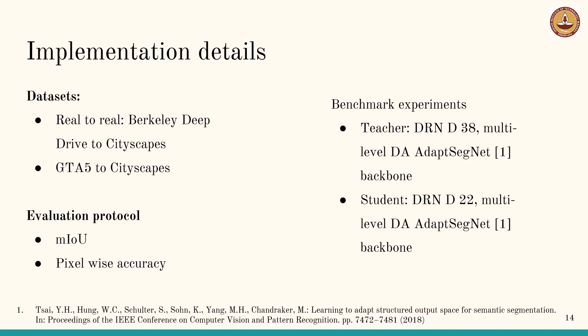We evaluate our proposed approach on both synthetic-to-real and real-to-real adaptation scenarios. We evaluate our models on the validation images of the target domain dataset using the standard segmentation metrics: intersection over union and pixel-wise accuracy. For the benchmark experiments, we use the AdaptSegNet multi-level domain adaptation strategy in the backbone teacher and student networks. We use DRND38 as the backbone teacher network and DRND22 as the backbone student network.